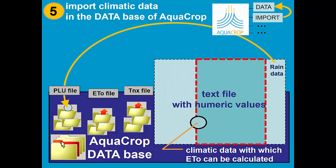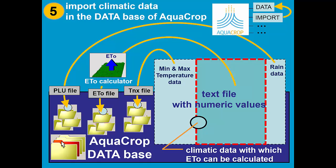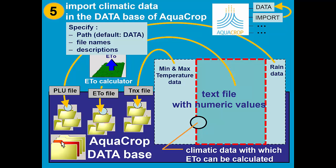It consists in moving rain data from the text file to a file with extension PLU. Min and max temperature data is transferred to a TNX file and ET0 to an ET0 file. If climatic data was available with which ET0 can be calculated, it will be calculated by means of the built-in ET0 calculator. To import the climatic data, we need to specify where to transfer the data — by default it is the AquaCrop database — and to specify the file names and descriptions of the PLU, ET0, and TNX files.